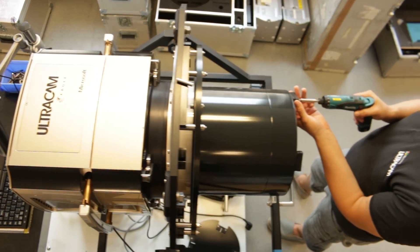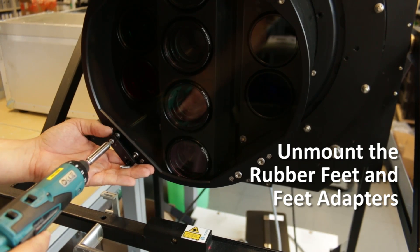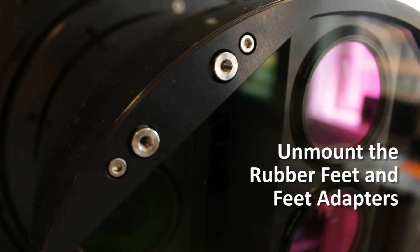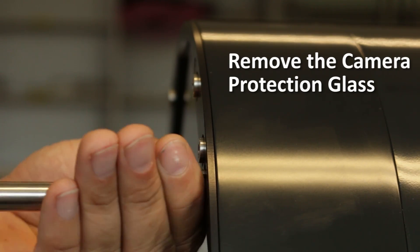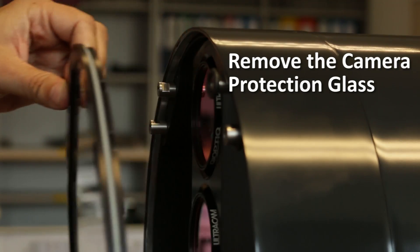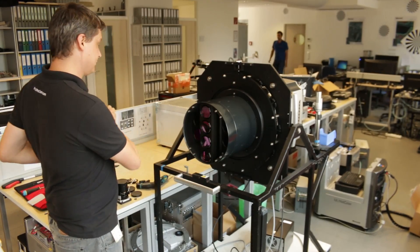After the camera has been prepared for the exchange, the rubber feet and feet adapters need to be removed. The next step is to remove the camera protection glass and the plastic cone cover.